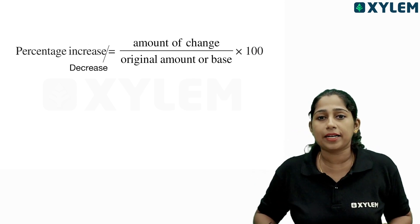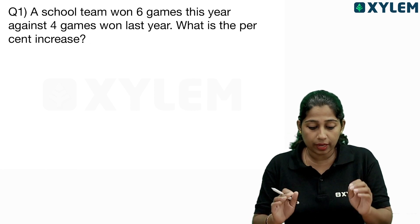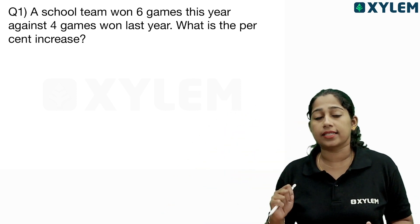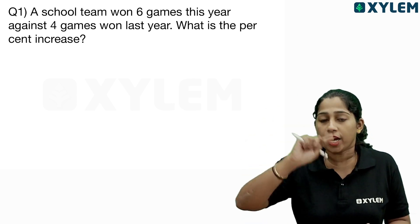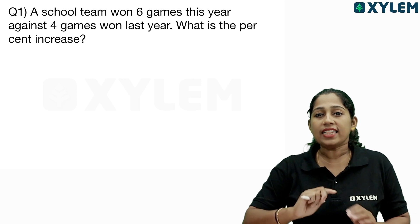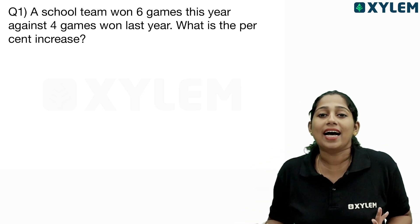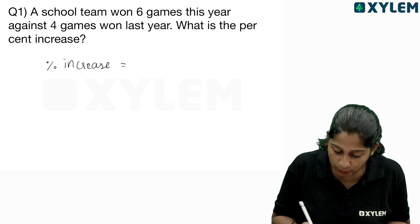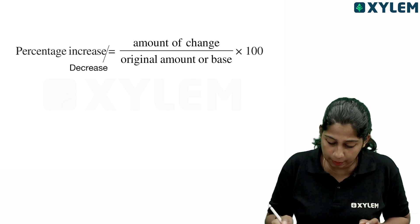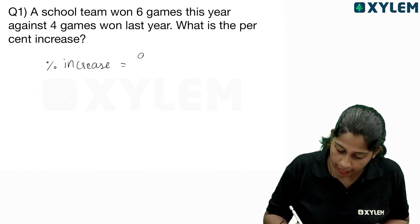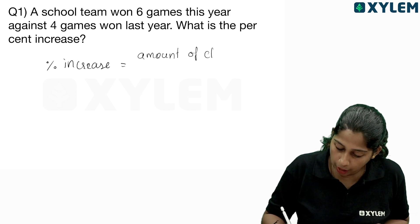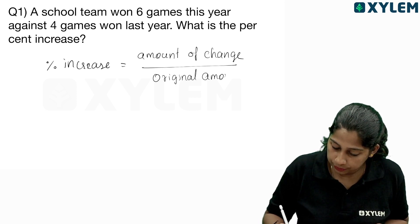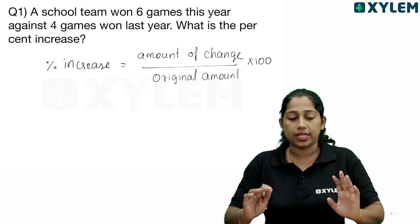The first question: a school team won 6 games this year, against 4 games won last year. Last year: 4 games. This year: 6 games. What is the percent increase? Our equation is: Percentage Increase equals Amount of Change divided by Original Amount into 100.